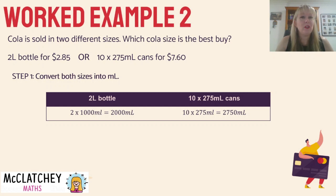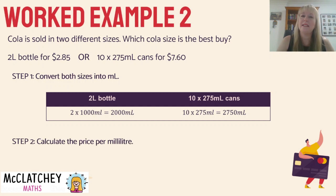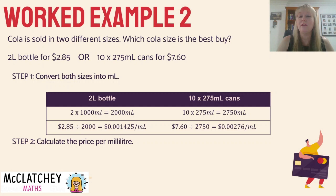In the first column we have the two-litre bottle: multiply by 1,000 millilitres to convert from litres to mL, giving 2,000 mL. In the right-hand column we have the 10 cans: 10 times 275 gives 2,750 mL. So we already have two different quantities to compare. In step two, we calculate the price per millilitre by dividing the price by the number of millilitres. The price per mL is a very small amount — less than a cent — and I've shown that with a slash indicating 'per millilitre'. It's a rate.